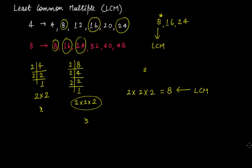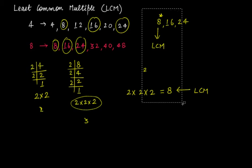In Part 1, the second method we discussed was prime factorization, where we found the prime factorization of numbers separately. In this new method, rather than calculating the prime factorization of each number separately and then finding the LCM, you will calculate the prime factorization of all the given numbers together. This is a much easier and faster way to calculate LCM.